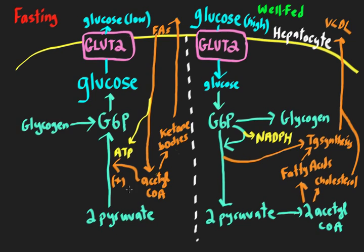Starting with the fasting state on the left side, we can see that glucose is low — we have hypoglycemia. The liver's important role here is that it needs to supply the plasma with glucose to stabilize plasma glucose and prevent it from going down even further. So in the liver, we need a high concentration of glucose to develop so it can flow out of the liver cell and supply the plasma, which can then go off to insulin-independent tissues like the brain, where they can take up glucose and use it for energy and making ATP.